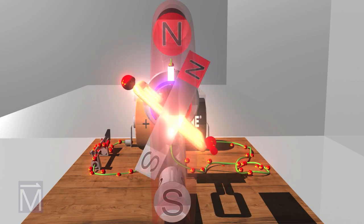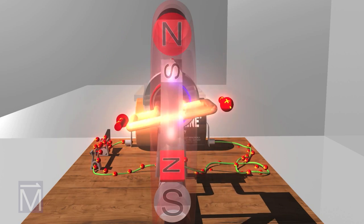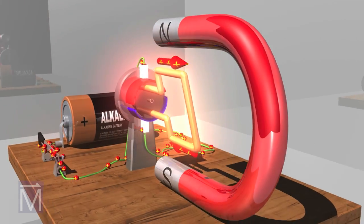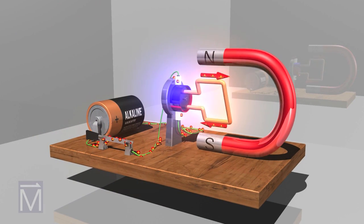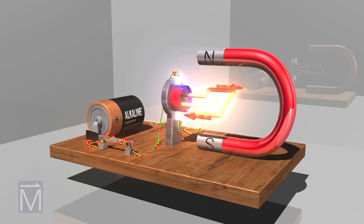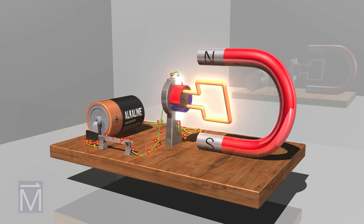This reverses the polarity of the electromagnet created by the powered armature. So once again, opposites attract, likes repel, and the armature turns another half rotation. As explained by Fleming's left-hand rule, the interaction of the magnetic fields will keep the rotor spinning and spinning for as long as there is current.